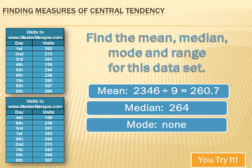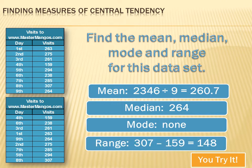Now let's calculate the mode — the most frequent value. There is no most frequent value; there's only one of each of the data points, nothing duplicated, so there is no mode. The range is 148, which is the difference between the biggest value and the smallest value.